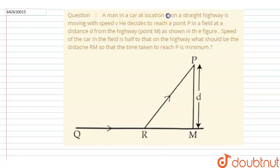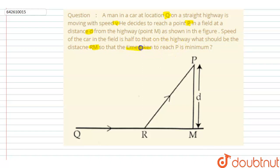Hello everyone. A man in a car at location Q on a straight highway is moving with velocity v. He decides to reach P in a field at a distance d from the highway, as shown in the figure. The speed of the car in the field is half the speed on the highway. What should be the distance RM so that the time taken to reach P is minimum?